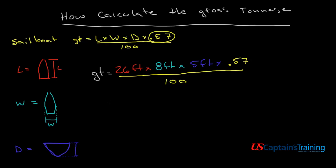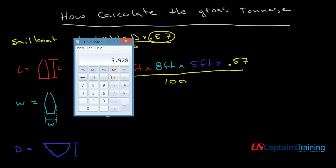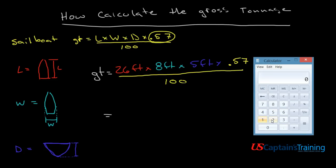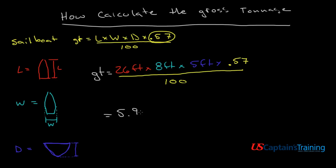Okay, so let's do this calculation. So what does this gross tonnage equal? Let's get the calculator out. So it equals 26 times 8 times 5 times 0.57. We'll equal that. Divide it by 100. And it says it equals 5.928.